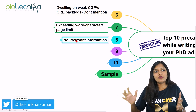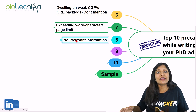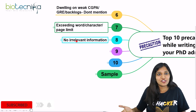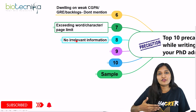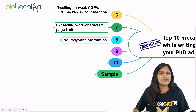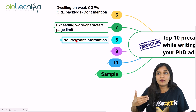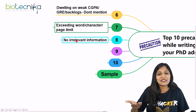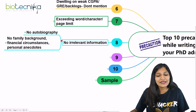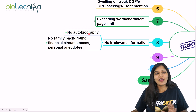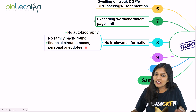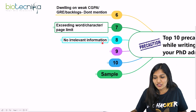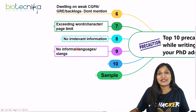The eighth point: no irrelevant information. People often confuse a personal statement with a statement of purpose. A personal statement is about yourself — your journey and how you got here. A statement of purpose is about why you are applying to this university or scholarship and what makes you the right candidate. No autobiography, no family background, no financial circumstances, and no personal anecdotes in your SOP.